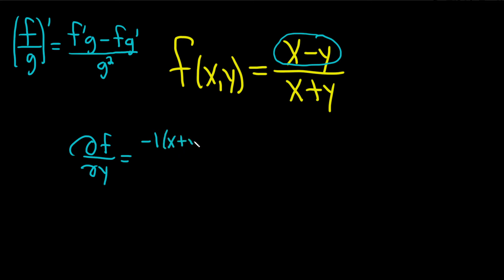So x plus y minus the top, which is x minus y, times the derivative of the bottom. Again, the derivative of x is zero because it's a constant, and the derivative of y is one. So that's all over the bottom one squared, which is x plus y squared.